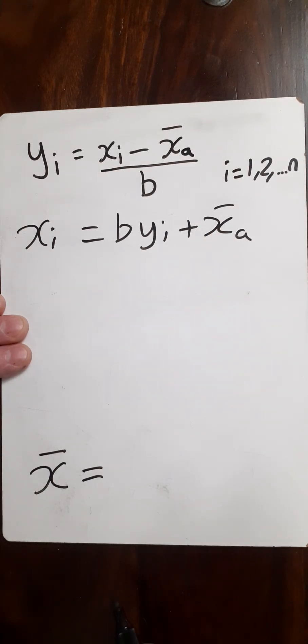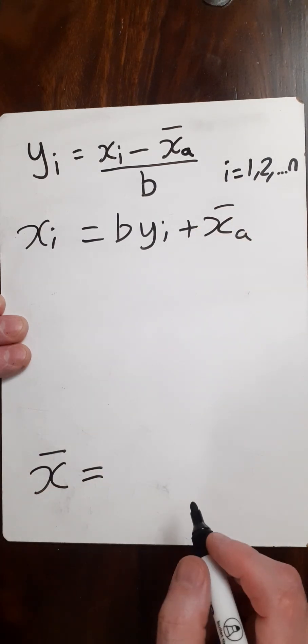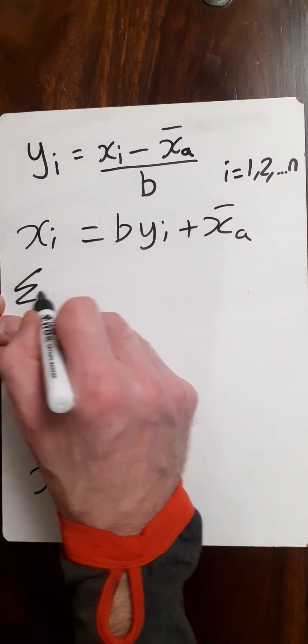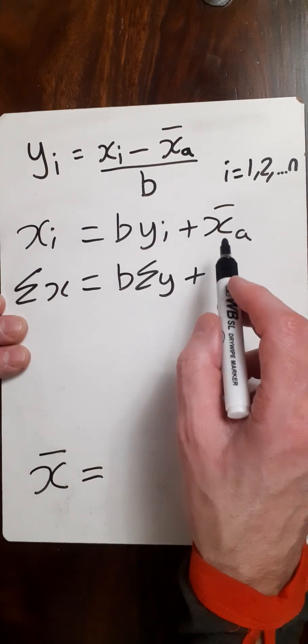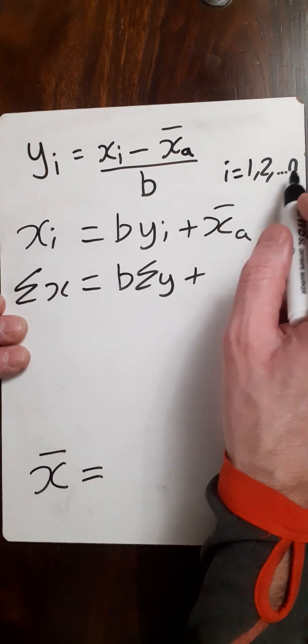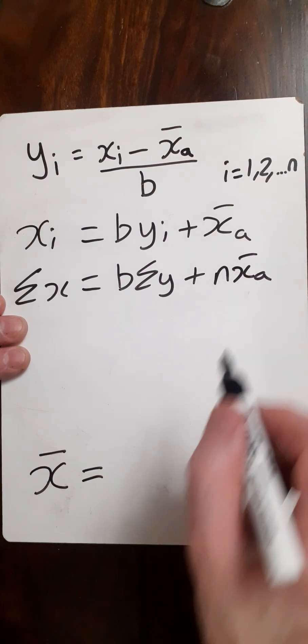And now what we want to do is sum all these up over the values of 1, 2, n. So then we'll have sum of all the x's is b times sum of all the y's. And here we need to just multiply this by n because it's all of these data points, so n and the assumed mean.